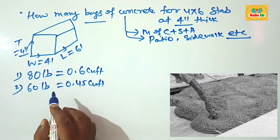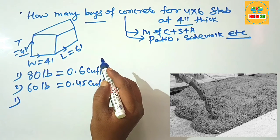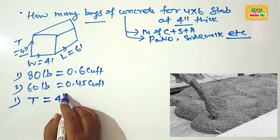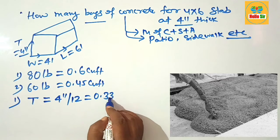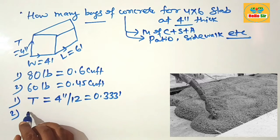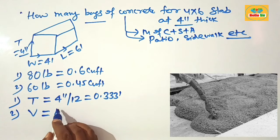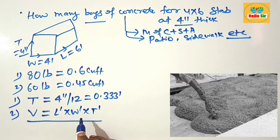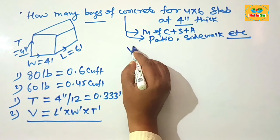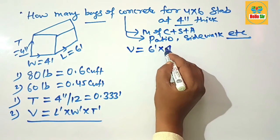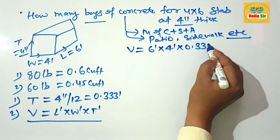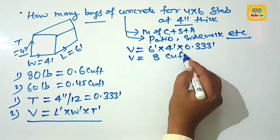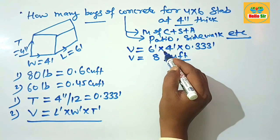To calculate the number of bags of concrete, first determine the volume of concrete in cubic feet. Convert the thickness from inches to feet by dividing by 12: 4 inches divided by 12 equals about 0.33 feet. Then multiply length by width by thickness: 6 feet × 4 feet × 0.33 feet equals about 8 cubic feet.